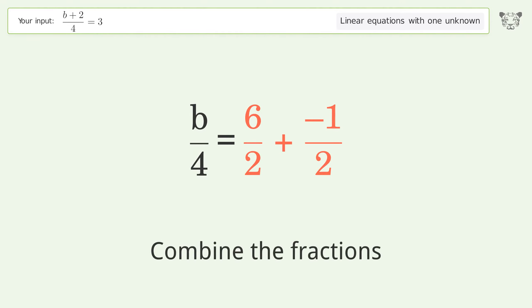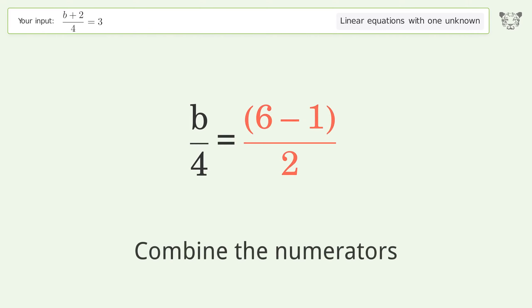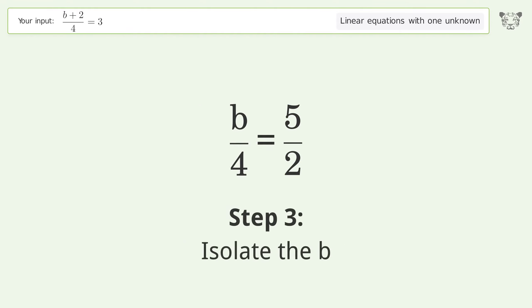Combine the fractions and combine the numerators. Isolate the b by multiplying both sides by 4.